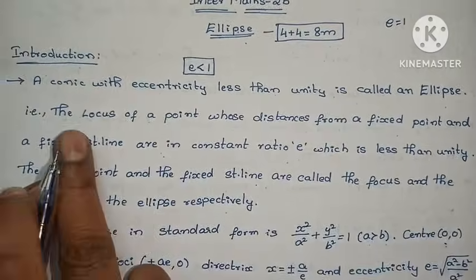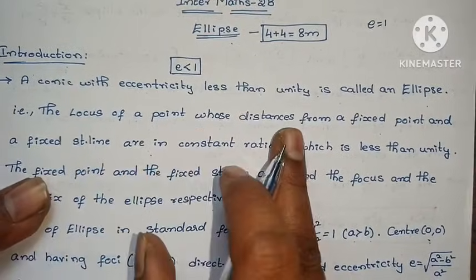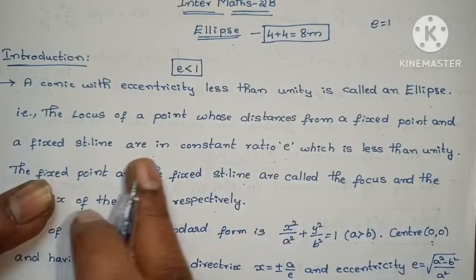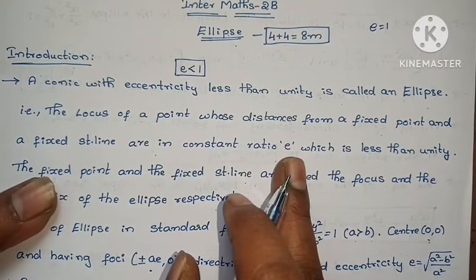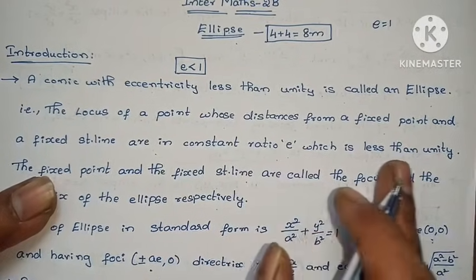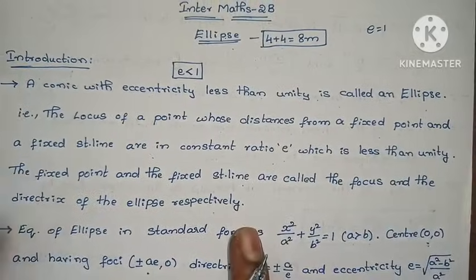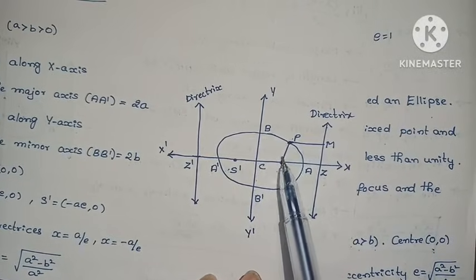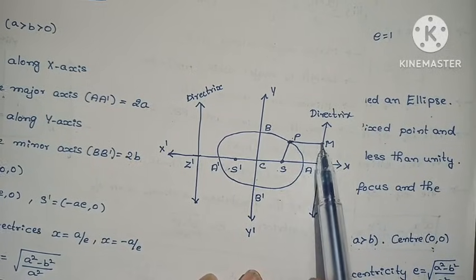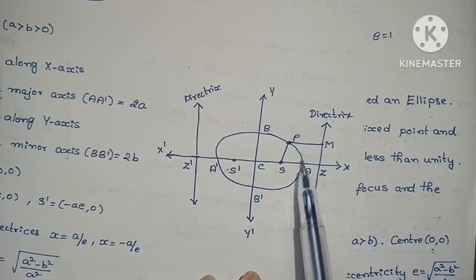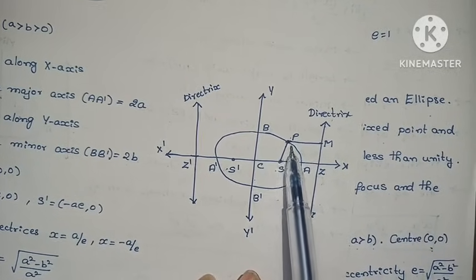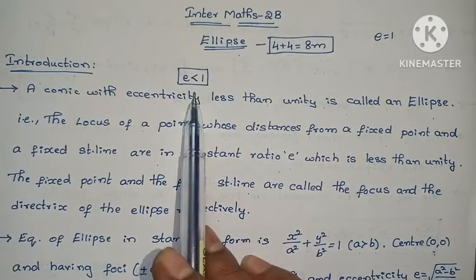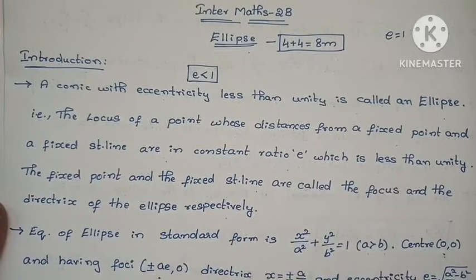The locus of a point whose distance from a fixed point and a fixed straight line are in a constant ratio e, which is less than unity, is called an ellipse. For ellipse, point P: SP by PM equals to e, where SP is perpendicular to the fixed straight line. So SP by PM equals to e, and e value less than 1 means it is an ellipse.